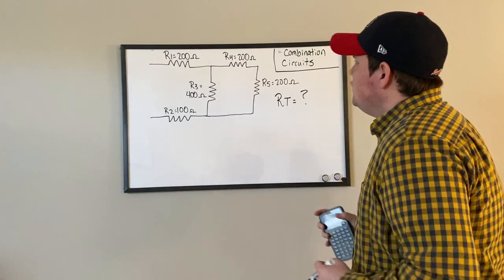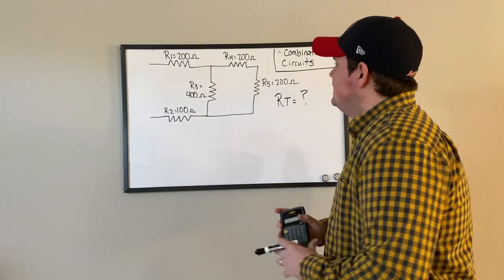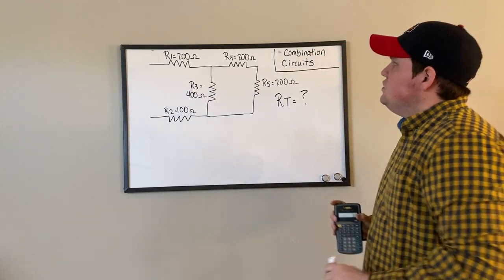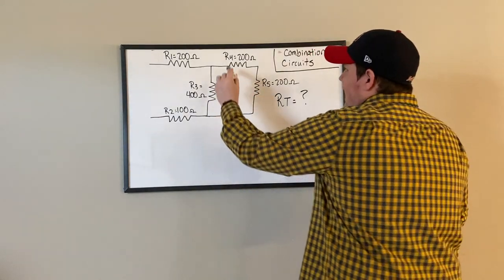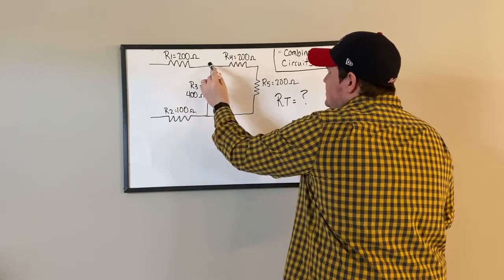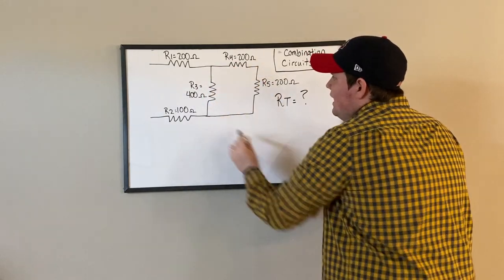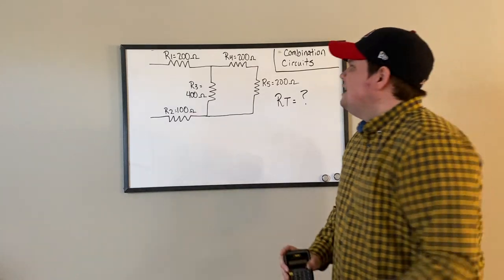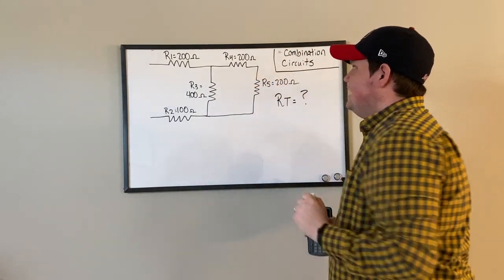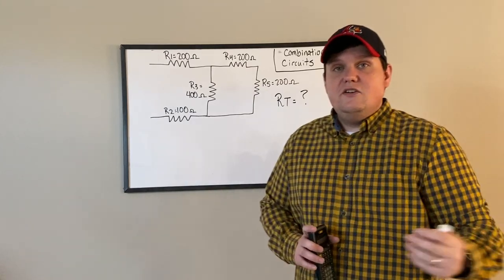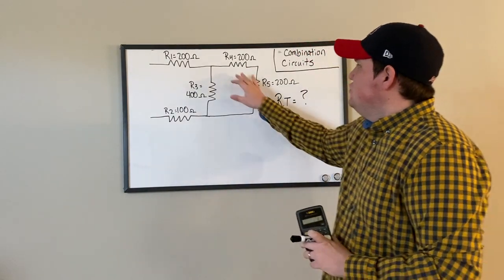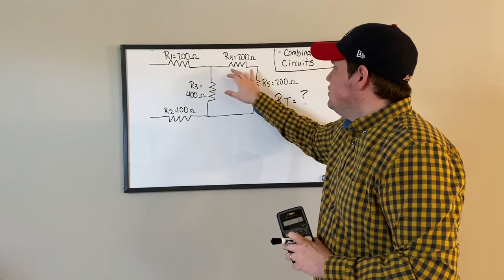The first thing we want to look at is the very end of the circuit. Looking at R4 and R5 — because this is the last branch in this circuit — we see that these resistors are connected in series with each other.